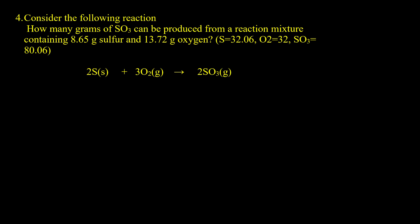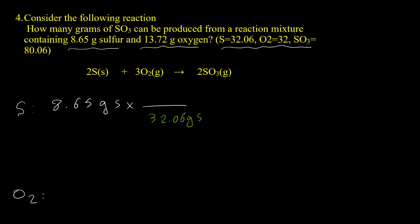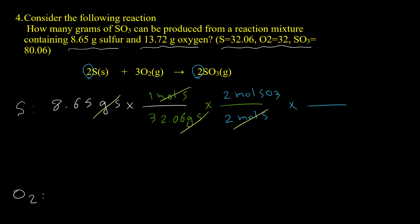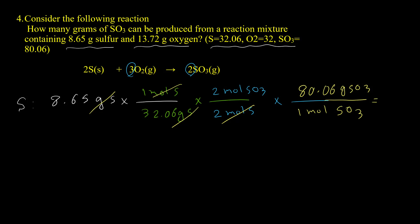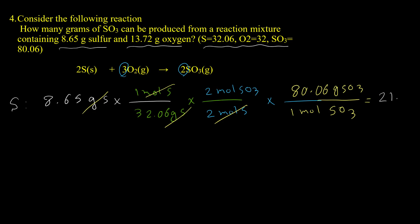Question 4: how many grams of SO₃ can be produced from 8.65 grams of sulfur and 13.72 grams of O₂? Molar masses are given for S, O₂, and SO₃. Using the second method, I'll perform the calculation twice. For sulfur: 8.65 g S × (1 mol S / 32.06 g) × (2 mol SO₃ / 2 mol S) × (80.06 g SO₃ / 1 mol SO₃) = 21.6 grams SO₃.